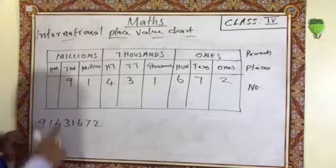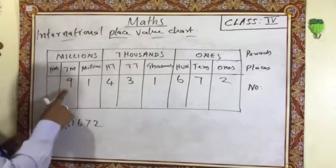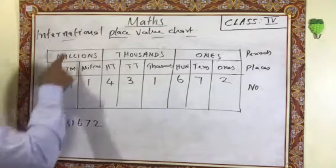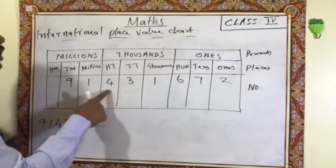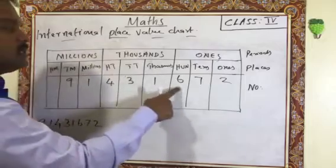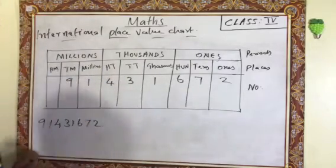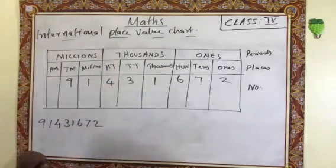One more time, listen carefully: 91,431,672. This is the way you have to read and write the number.